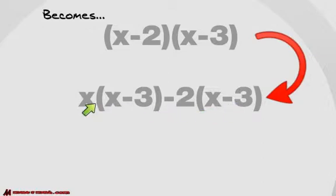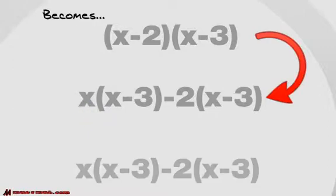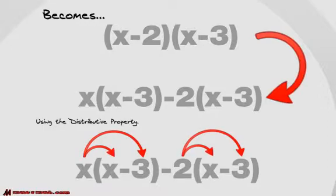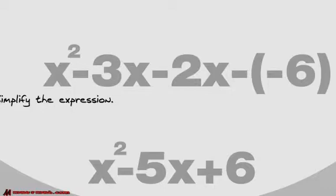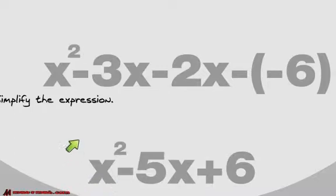From here, we do the distributive property again. That x goes into each of those terms, and that 2 goes into each of those terms. So it's the distributive property, and then the distributive property again. This is what we end up with: x squared minus 3x minus 2x minus negative 6. We simplify this expression and get x squared minus 5x plus 6. This is our trinomial example, where a is 1, b is negative 5, and c is 6.